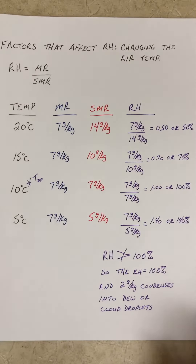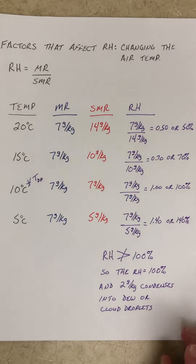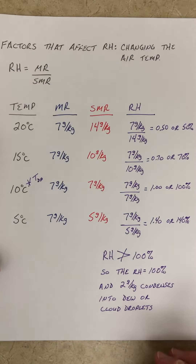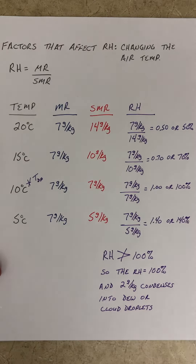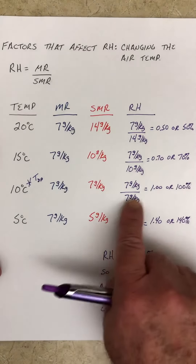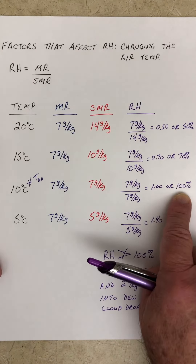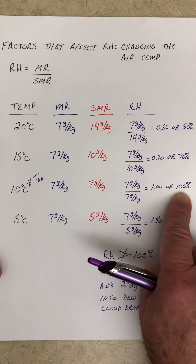Hi class. We're going to reuse this figure that we just drew in order to get across the point of dew point temperature. The definition of the dew point temperature is the temperature to which you have to cool the air in order to reach saturation. First of all, let's remember what saturation is — saturation is a relative humidity of 100 percent.